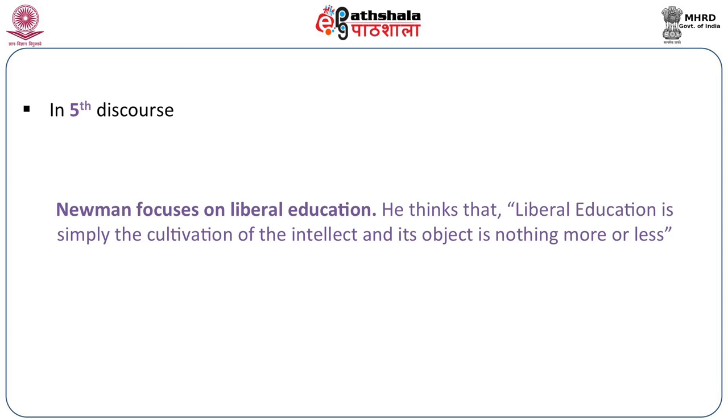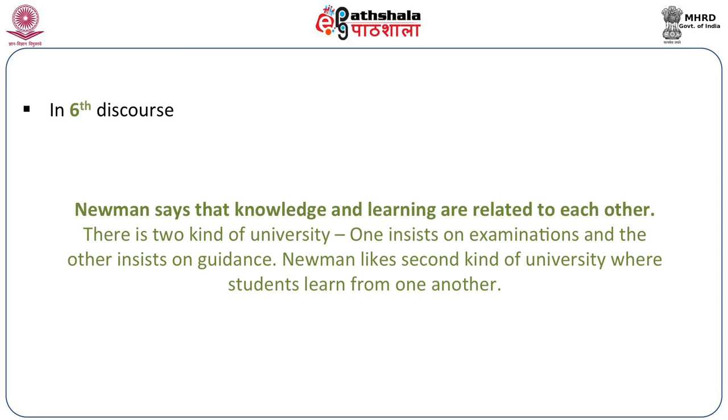In the fifth discourse, Newman focuses on liberal education. He thinks that liberal education is simply the cultivation of the intellect, and its object is nothing more or less than that. In the sixth discourse, Newman says that knowledge and learning are related to each other. There are two kinds of universities: one insists on examination and the other insists on guidance. Newman likes the second kind of university, where students learn from one another. In this essay, two very important points come forward: one is the connection of theology and science. Religion and science are admixed — it is very difficult to make them separate.